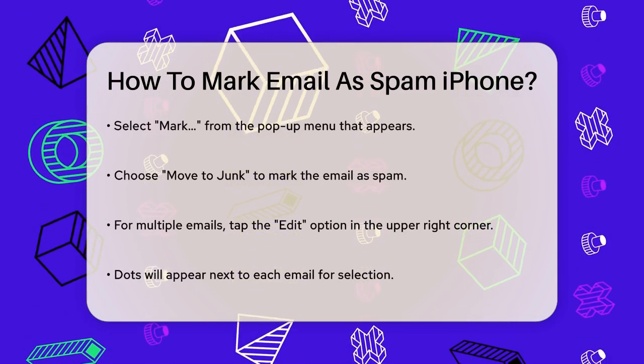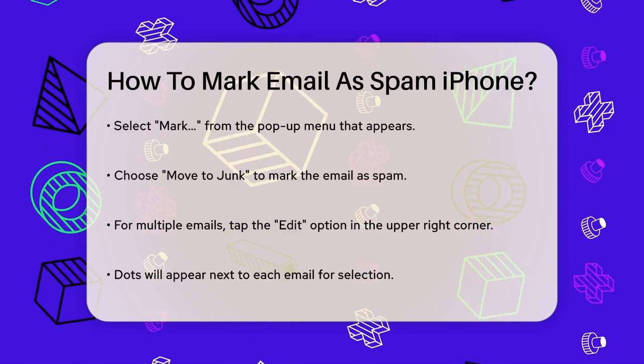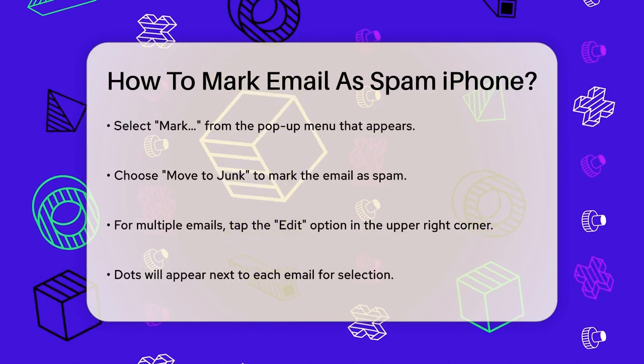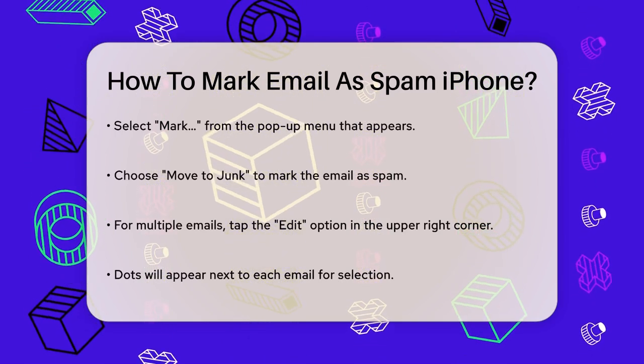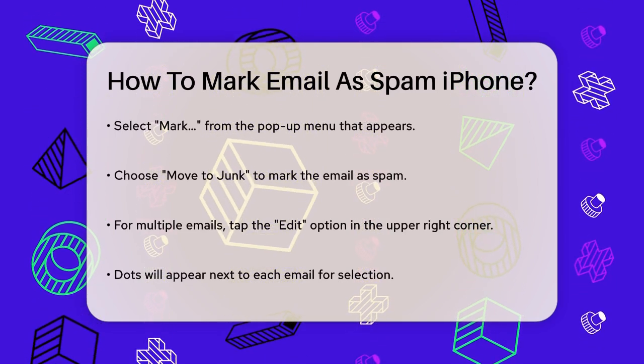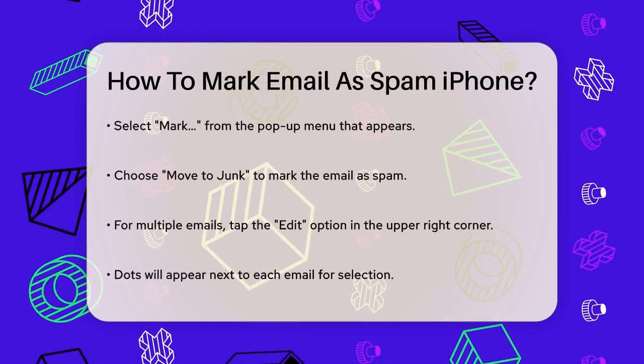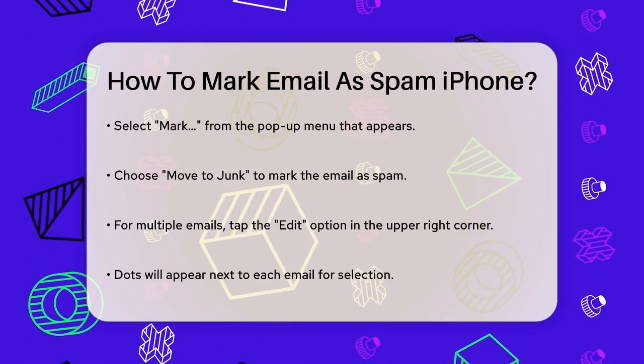If you need to mark multiple emails as spam at once, tap the Edit option in the upper right corner of the screen. This will show dots next to each email, allowing you to select multiple messages.